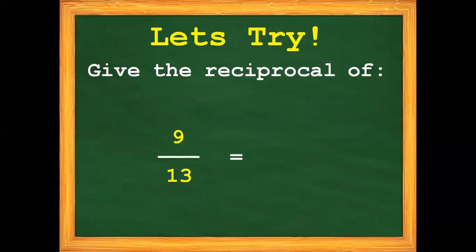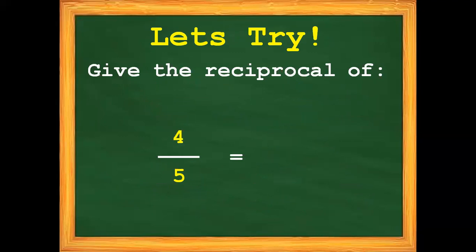Let's try. Give the reciprocal of 9 thirteenths. We are going to interchange the position of 9 and 13, so we get 13 over 9, or 1 and 4 ninths. Another — we have 4 fifths. We flip the position of the numerator and the denominator, so the answer is 5 fourths, or 1 and 1 fourth.